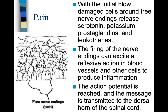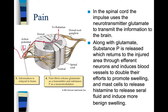The action potential is reached and the message is transmitted to the dorsal horn of the spinal cord. In the spinal cord, the impulse uses the neurotransmitter glutamate to transmit information to the brain. Along with glutamate, substance P (where P stands for peptide) is released, which returns to the injured area through efferent neurons and induces blood vessels to double their efforts to promote swelling. With the first blow it starts to swell, and then after a couple of seconds it swells up a great deal. Mast cells release histamine to release serum fluid and induce more swelling.